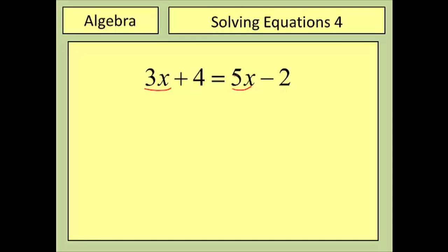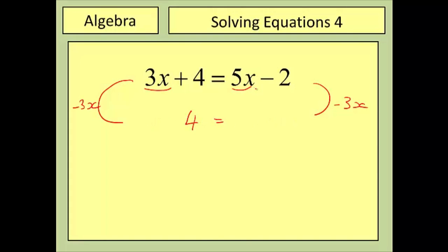What we need to do is get rid of the x's on one of the sides. I need to decide whether I'm going to get rid of the five x or the three x. If I got rid of the five x, on this side the three x becomes a minus two x — I don't want to introduce too many negatives, so my first step is going to be to subtract three x from both sides. That gets rid of the three x here, leaving nothing; the four is unaffected; and five x minus three x gives positive two x.